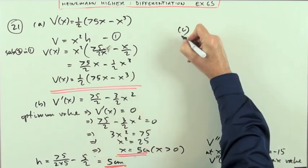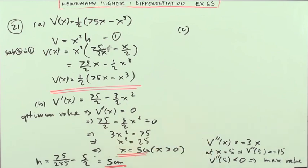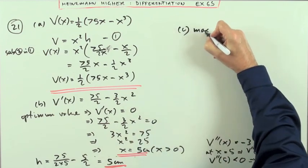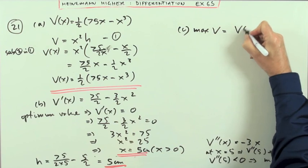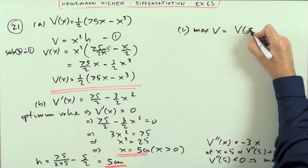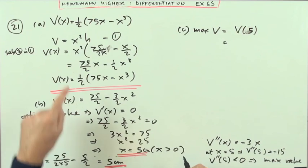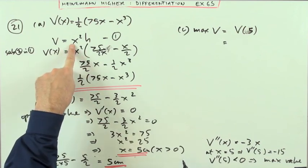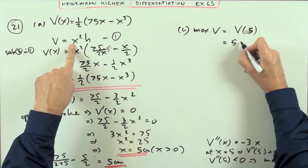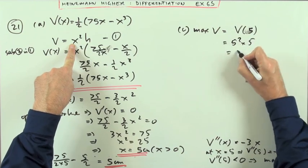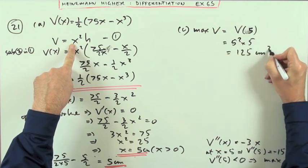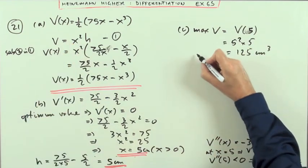And part C then says, what is that maximum volume? Well the maximum volume is the volume when x is 5. But I think I'll just go back to the original one because I've got x squared h here. So that's just going to be 5 squared times 5, which is 125 centimeters cubed maximum volume.